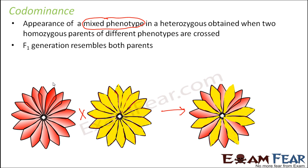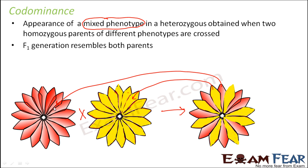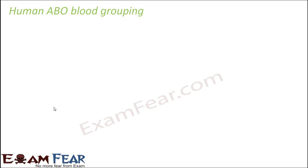In co-dominance, the F1 generation resembles both parents. You cannot say it is intermediate because it has some traits that exactly match one parent and some that exactly match the other. Both alleles are equally expressed — no one is dominating over the other.